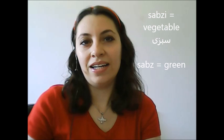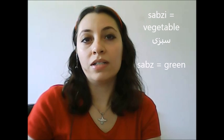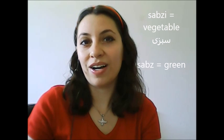In general, if you remember, the word we have for vegetable is sabzy. In one of my first videos I mentioned that the word sabs means green — that was in my video about colors. So the word sabs is green, and that is why for vegetable we have sabzy.